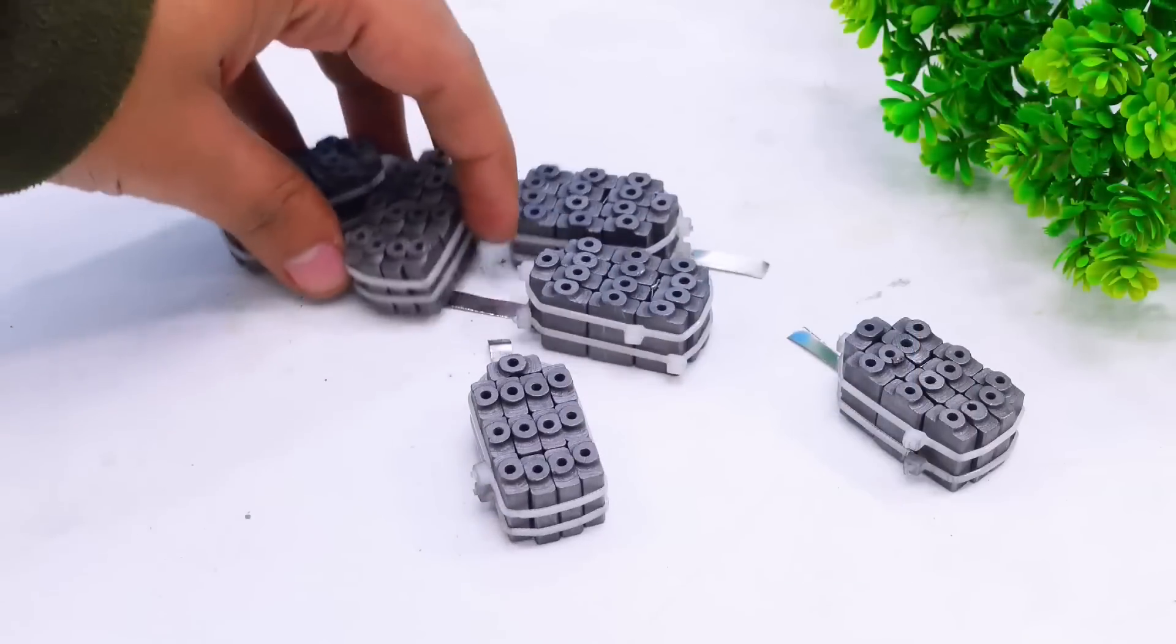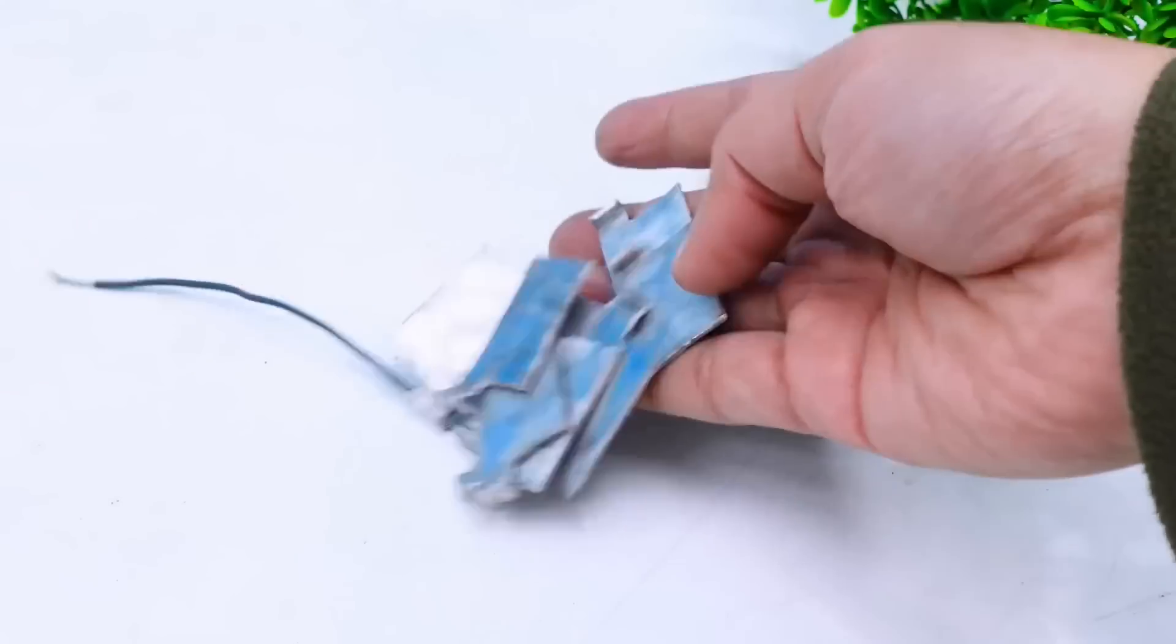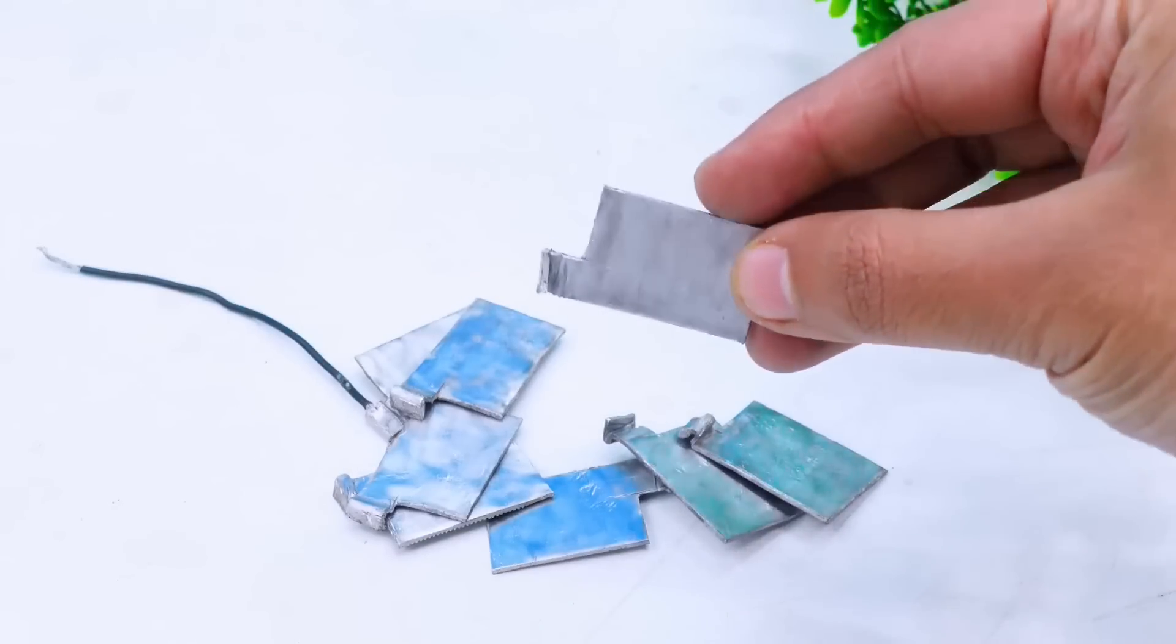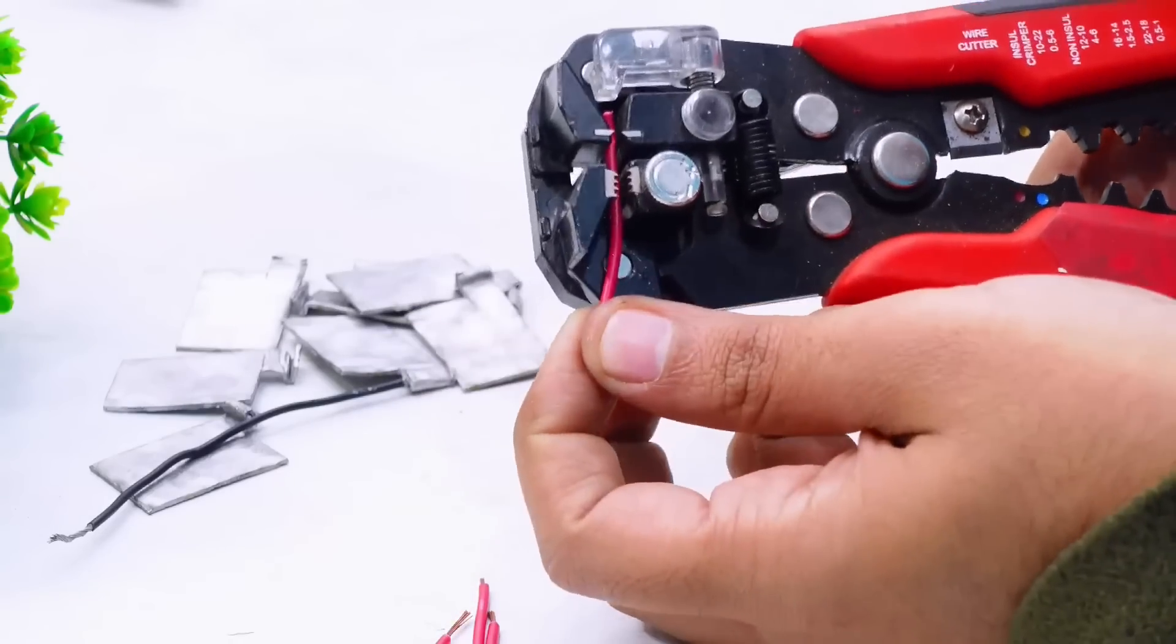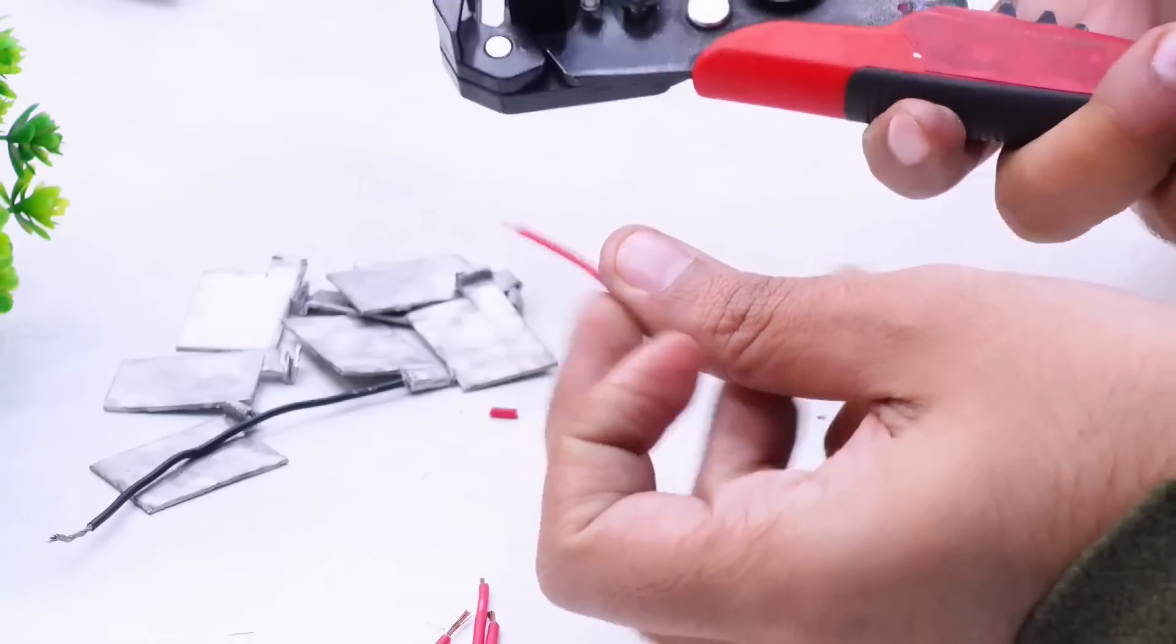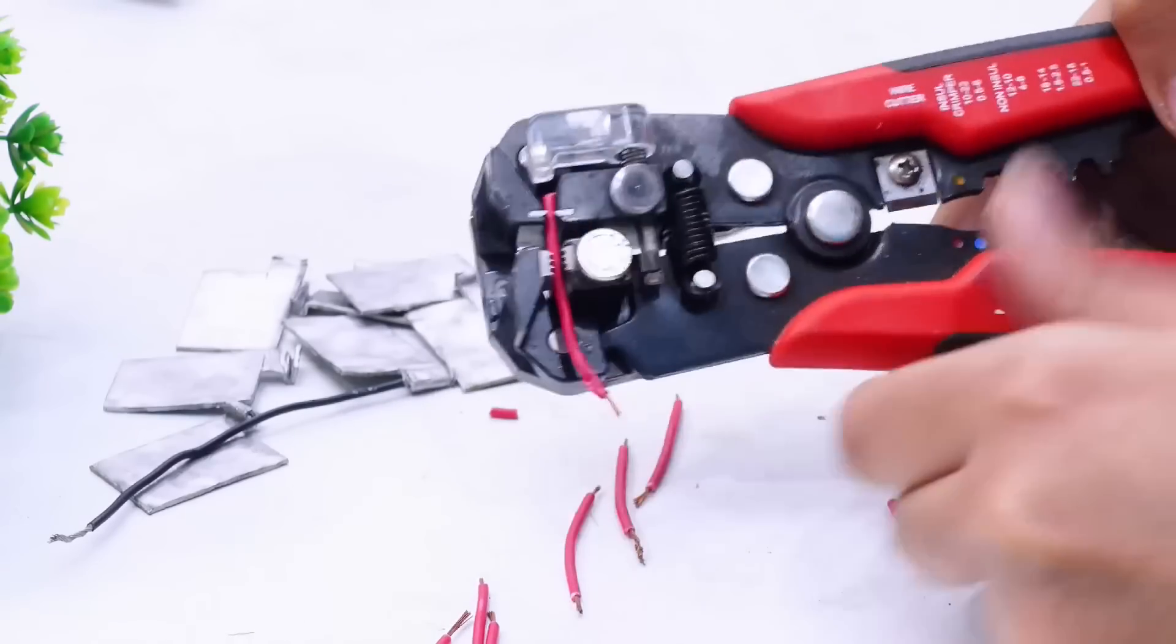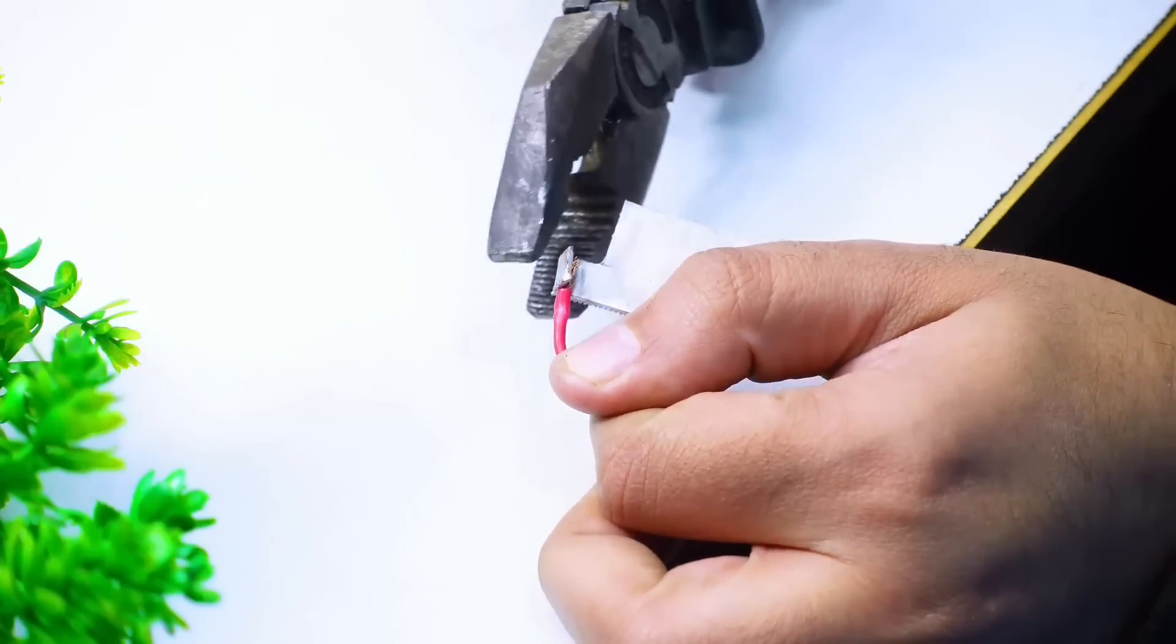So finally here I've completed the construction of all the eight carbon cathodes and these are all the final cleaned up aluminum plates for each cell. So here I'm cutting off the red wires for the aluminum plates. Done, finally connecting the red wire with the plate.